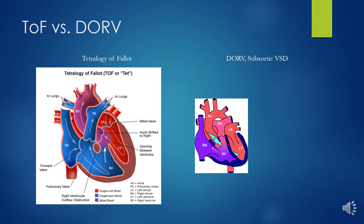The subaortic type is the most common. The VSD is located between the aortic valve and the superior marginal trabeculum, with the aortic annulus being the closest great vessel. Oxygenated blood from the LV streams across the VSD to the aorta, and deoxygenated blood from the RV flows mainly into the PA.